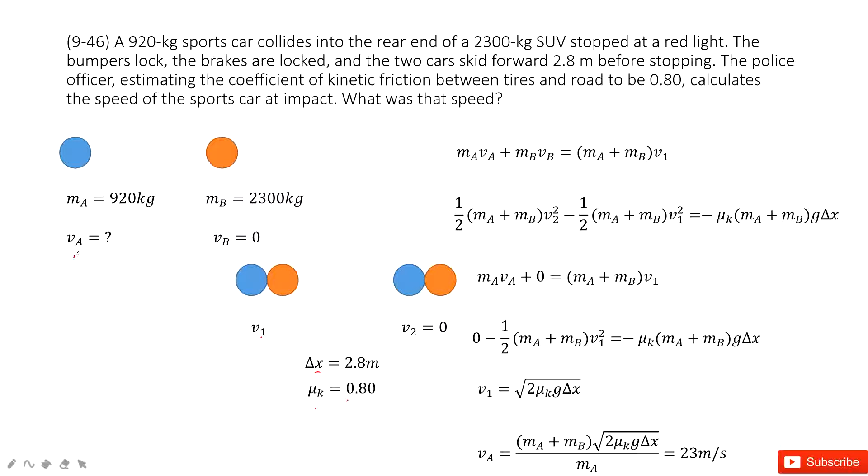So now we need to find the V_A. How can we do that? So we look at this process. First part, the linear momentum is conserved when A just hit the B. Agree? Because no external force act on them.